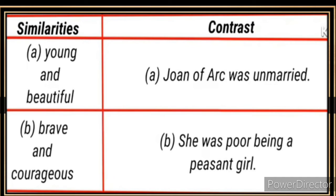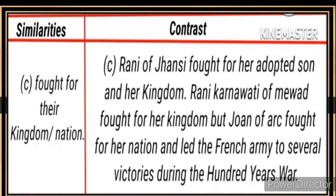Similarities and contrasts — Joan of Arc was young, beautiful, unmarried, brave and courageous, and poor being a peasant girl. Similarity: both fought for their kingdom and nation. Contrast: Rani of Jhansi fought for her adopted son and her kingdom; Rani Karnawati of Mewar fought for her kingdom; but Joan of Arc fought for her nation and led the French army to several victories during the Hundred Years' War.